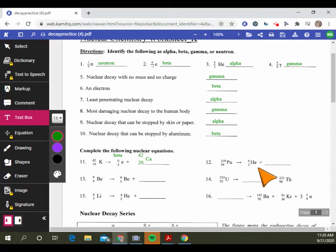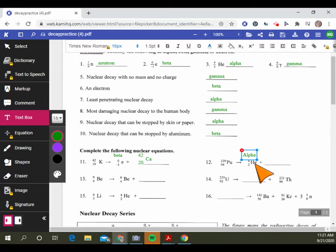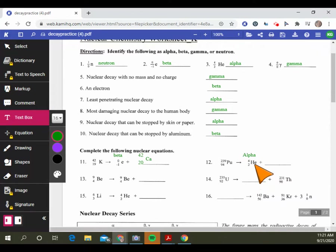Moving to number 12, you can see it has that alpha particle. So I'm going to label it alpha. That's not in the instructions, it's just an extra step for us to remember. If this plutonium-239 emits alpha radiation, it's going to change its nucleus.